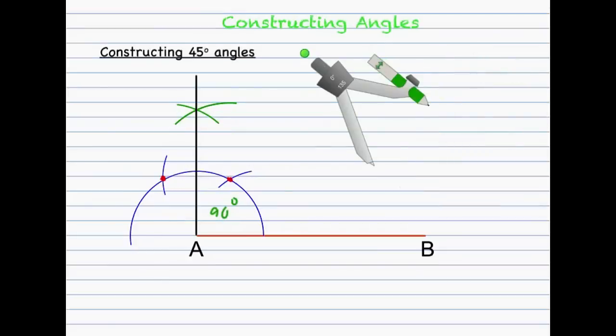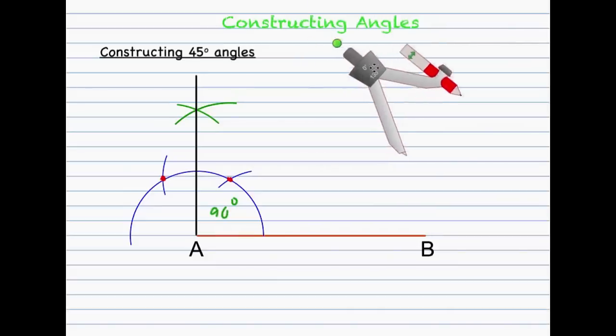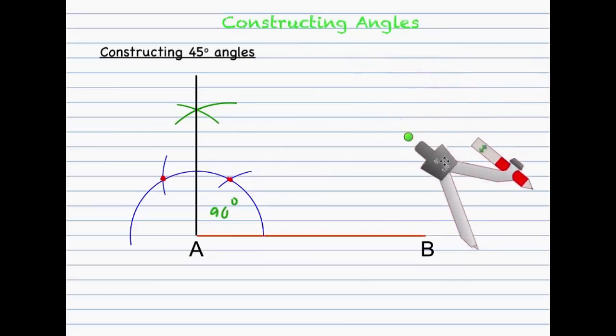The last construction I'll look at is the 45 degree angle. 45 degrees is just half of 90 degrees, so if I bisect a 90 degree angle I end up with a 45 degree angle. Assume that I already have a 90 degree angle drawn.